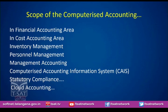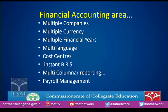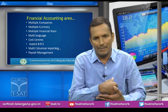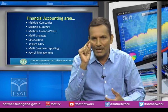The scope of computerized accounting covers areas where it has recently emerged. In financial accounting, multiple companies can have books of accounts and final reports prepared with a single button press, whereas manual accounting requires separate books for each company. Multiple currency support allows preparing financial statements in the respective currencies — for example, Indian rupees and US dollars — by pressing a single button for conversion.